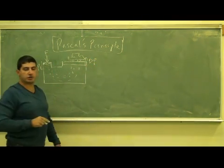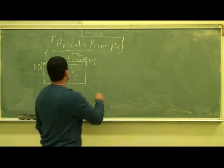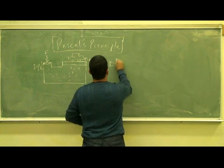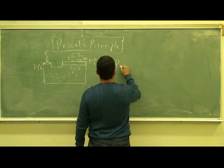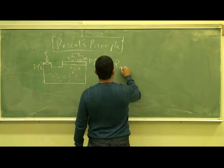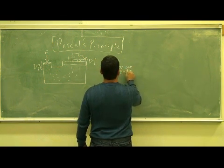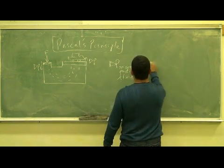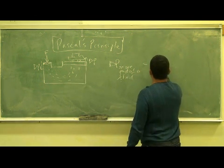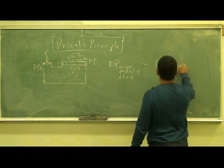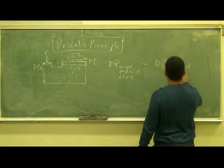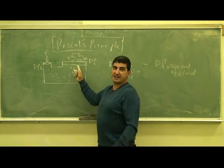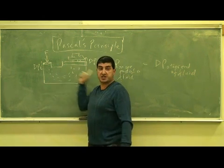You have that same change in pressure realized on the other side. So delta P from one end of a fluid is equal to delta P of the other end. So if I increase the pressure on this side, the pressure on that side increases equally, even if the surface area is different.